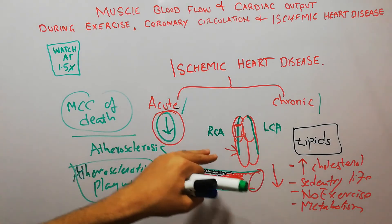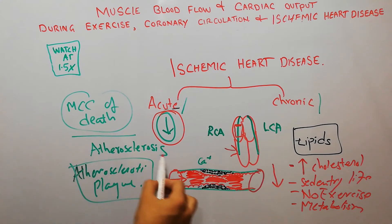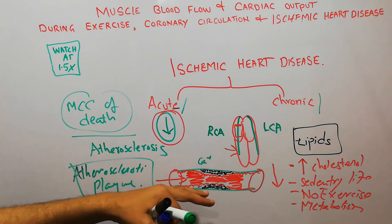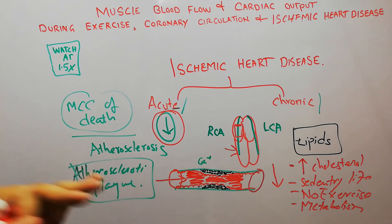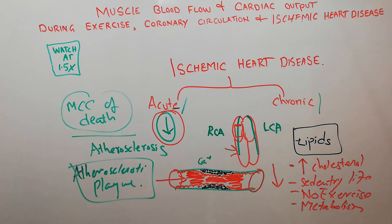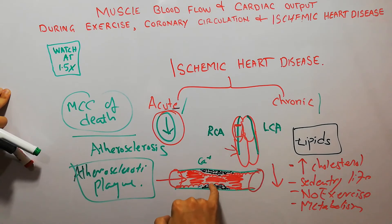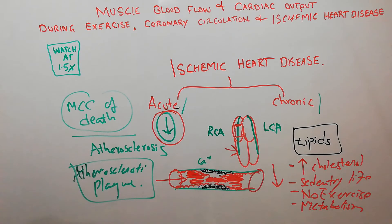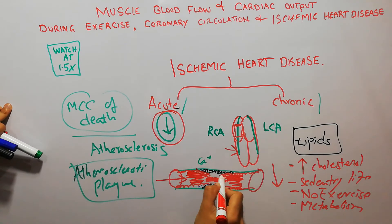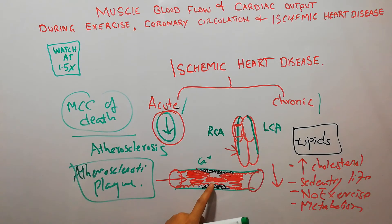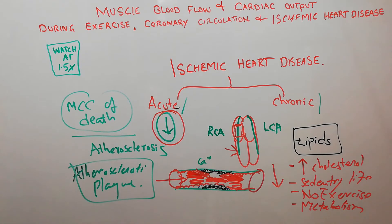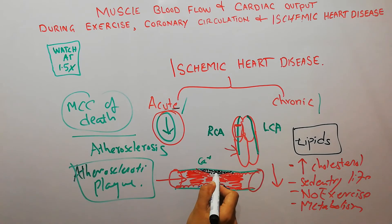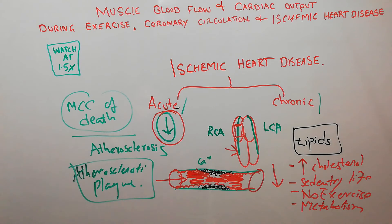The atherosclerosis process is not sudden — it takes weeks, months, and years. The atherosclerotic plaque develops over a long period of time. However, sometimes there is a break or rupture of the endothelium, because the growing plaque can rupture or destroy the endothelial lining, leading to exposure of the atherosclerotic layer to the blood.